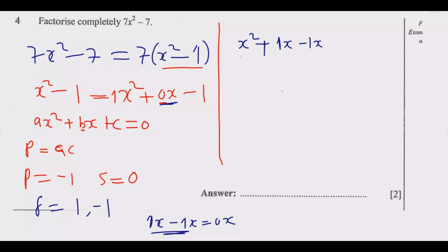Then I can just rearrange this one so it is easier for me to work with them. I'm going to bring this one here so that I don't spend a lot of time. So it's going to be x² plus 1x, then minus 1x, this one has gone this side, then minus 1.